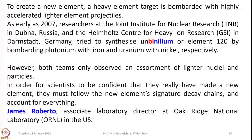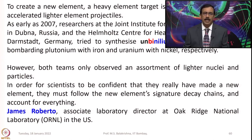You may be interested to know how post-uranium elements were generated. To create a new element, a heavy element target is bombarded with highly accelerated lighter element projectiles. As early as 2007, researchers at the Joint Institute for Nuclear Research in Dubna, Russia, and the Helmholtz Center for Heavy Ion Research in Darmstadt, Germany, tried to synthesize element 120 — called unbinilium by IUPAC — by bombarding plutonium with iron and uranium with nickel respectively. However, both teams only observed an assortment of lighter nuclei and particles, indicating how difficult it is to make heavier elements in the laboratory.